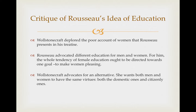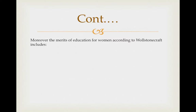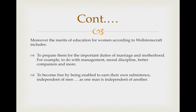Wollstonecraft advocates for an alternative: if men and women are equally possessed of reason, they must be equally educated in its use. She wants both men and women to have the same virtues — both the domestic ones and the civic ones. Moreover, the merits of education for women, according to Wollstonecraft, include preparing them for the important duties of marriage and motherhood — for example, management, moral discipline, being a better companion, and more. She did not wish them to have power over men, but over themselves.